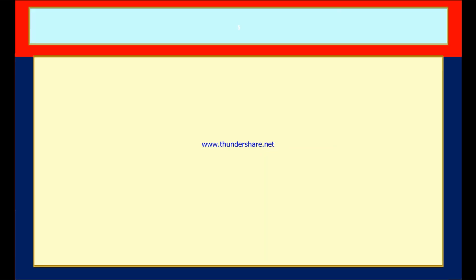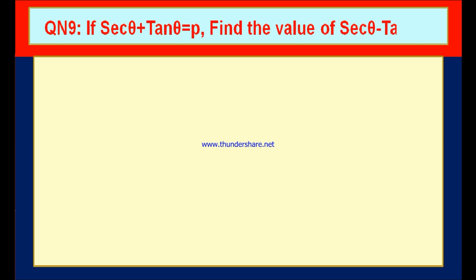Here is exercise 11.4 and this is question number 9: If secant theta plus tan theta is equal to p, then find the value of secant theta minus tan theta. If you observe the question, you can find that secant theta plus tan theta value is given as p, and you have to find the value of secant theta minus tan theta.